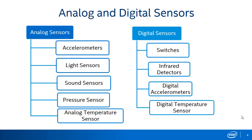Sensors are fundamentally classified into two types. Sensors which produce continuous output are known as analog sensors. Analog sensors are used to measure pressure, temperature, sound, light, and displacement, as they are analog in nature. Another class of sensors are called digital sensors. Digital sensors generate output pulses with logic zero or logic one — that is, a low or a high. Several examples of digital sensors are switches, infrared detectors, digital accelerometers, digital temperature sensors, etc.